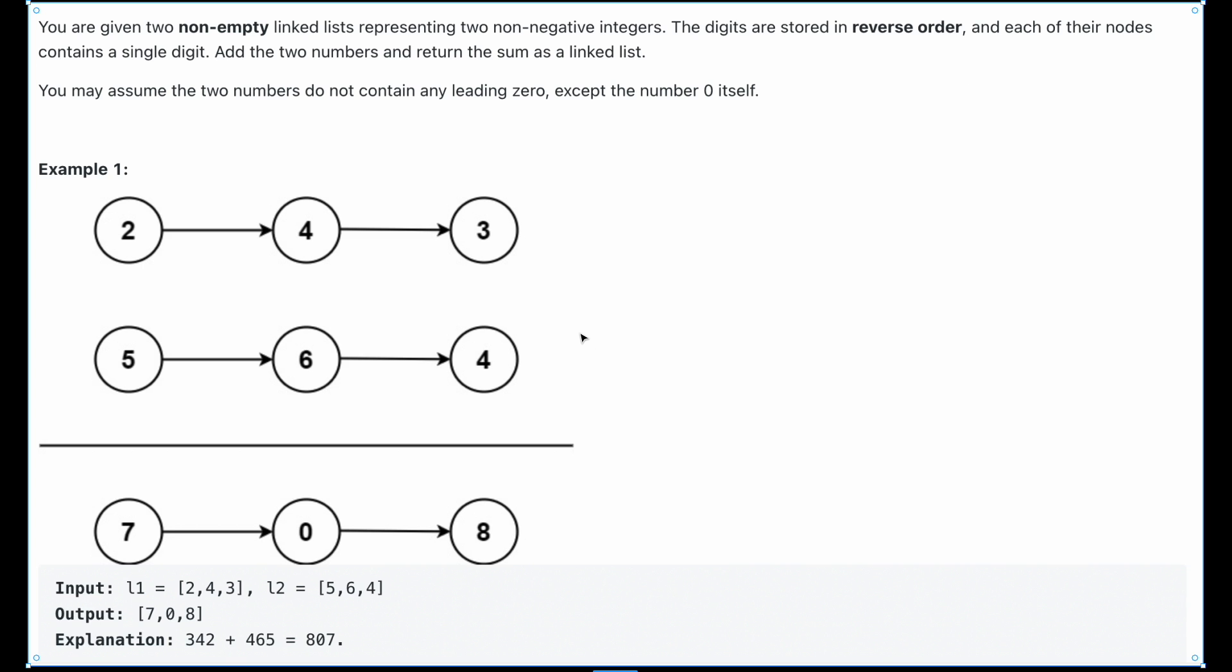Well, in this case we have a linked list, so we can't use that solution because obviously linked lists are not accessible by index. We have to use the dot val and then call dot next to get to the next element. So what we want to do is we'll be given linked list 1 and we'll be given linked list 2.